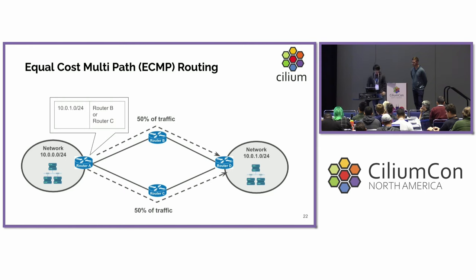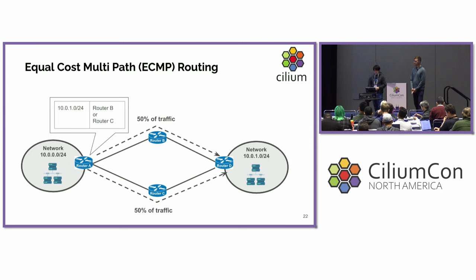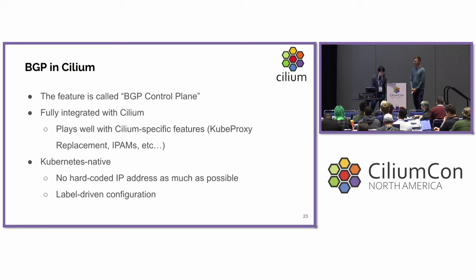Another way is using both paths. In this case there are two paths, so 50% of packets go to router B and 50% go to router C. This is specifically called equal-cost multipath, or ECMP. With this feature, we can essentially load balance traffic within the network. This is a frequently used technique in BGP networks, and we also have a use case that uses ECMP in Kubernetes as well.